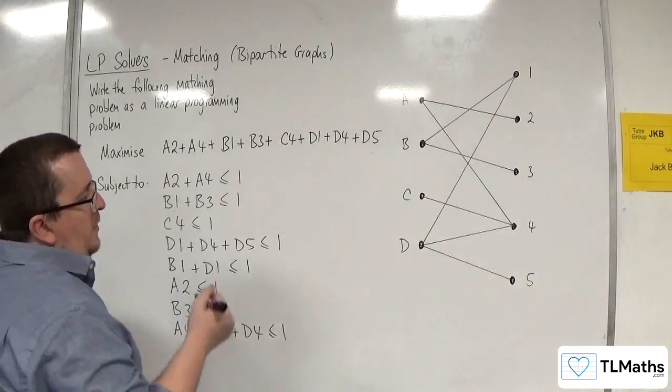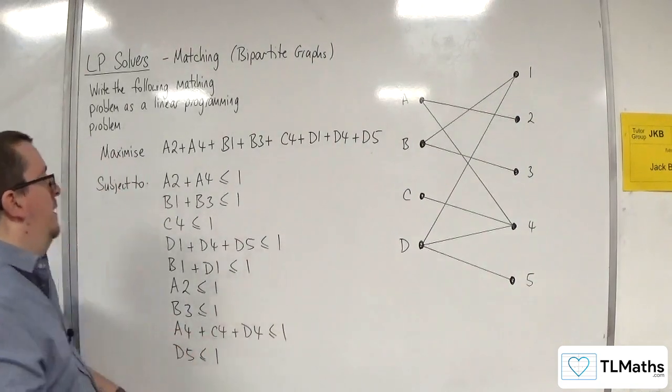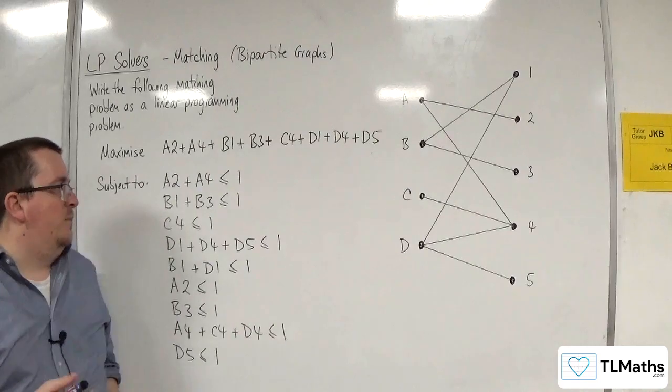And for job 5, there's only one worker that can do that, so that's got to be less than or equal to 1 as well. And so this is my linear programming problem.